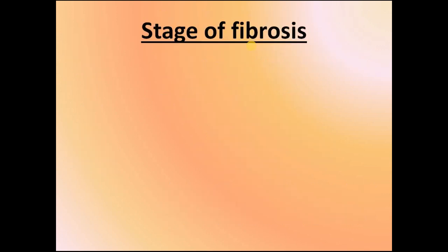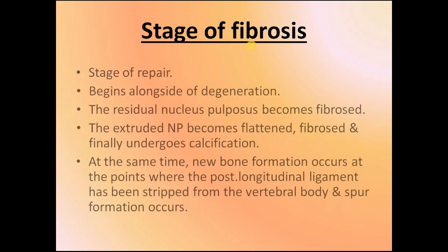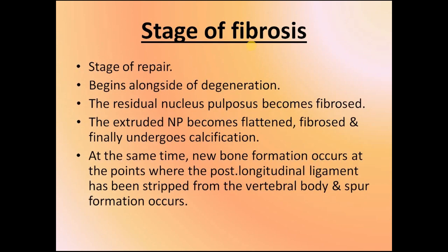The third is the stage of fibrosis, which is the stage of repair. It begins alongside degeneration. The residual nucleus pulposus becomes fibrosed, and the extruded nucleus pulposus becomes flattened, fibrosed, and finally undergoes calcification. At the same time, new bone formation occurs at the points where the posterior longitudinal ligament has been stripped from the vertebral body, and spur formation occurs.